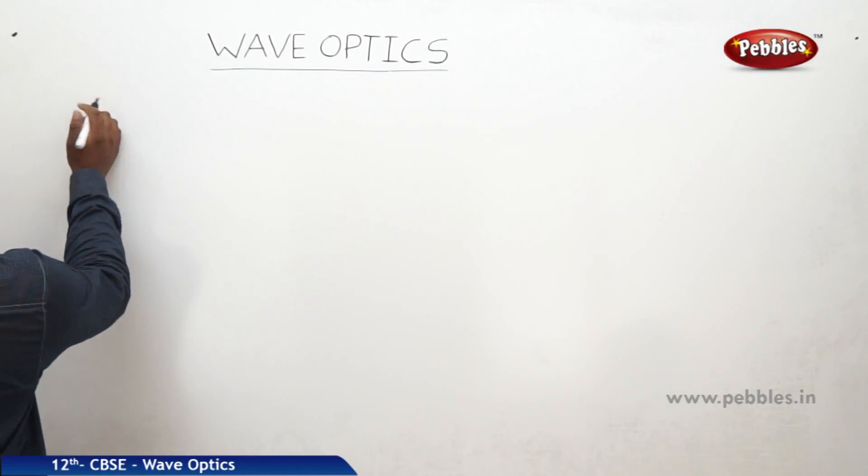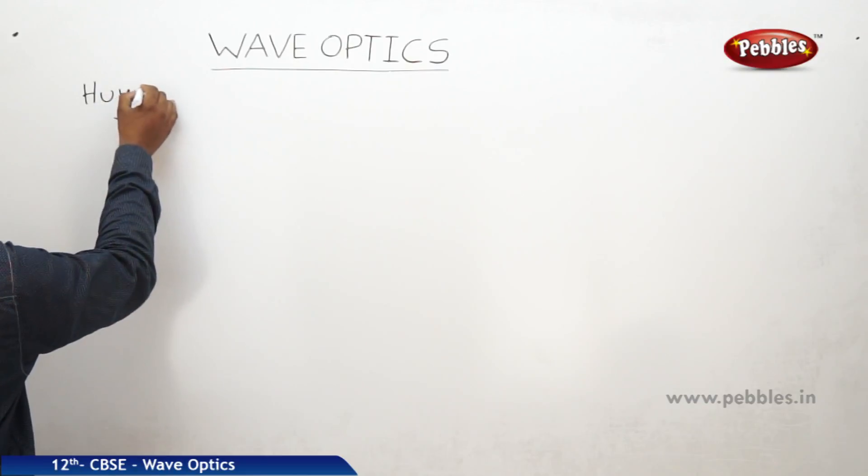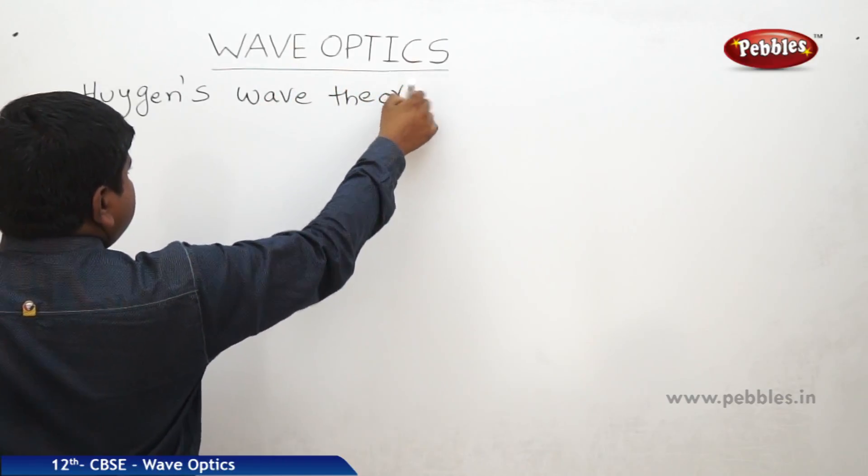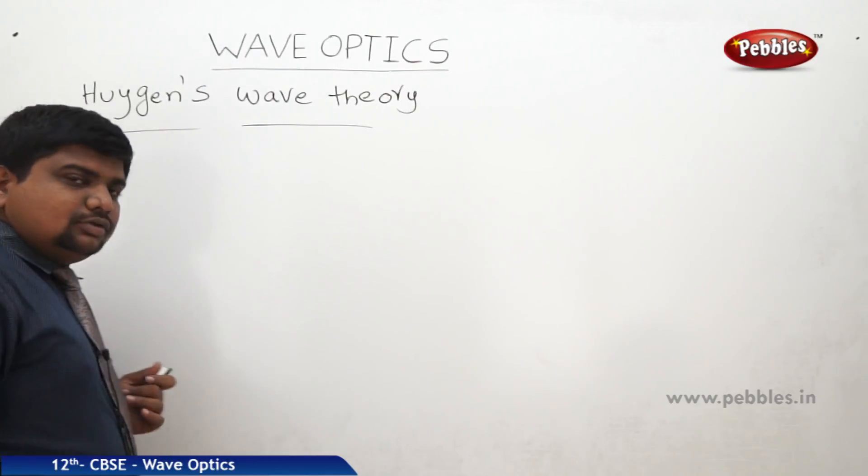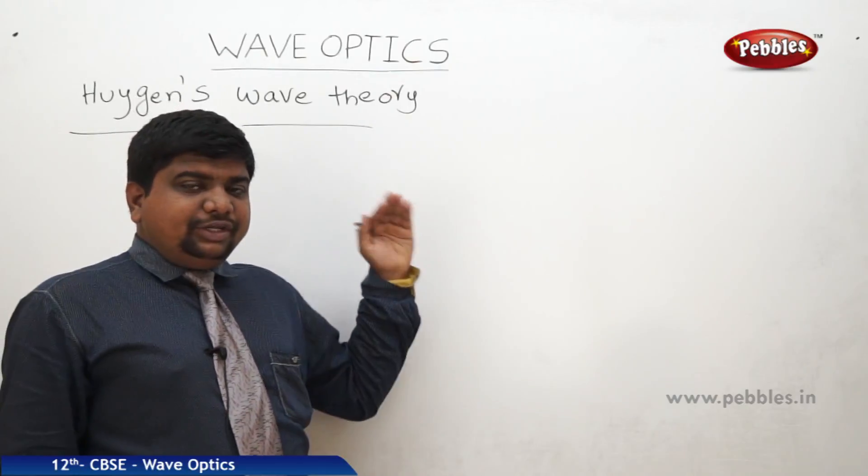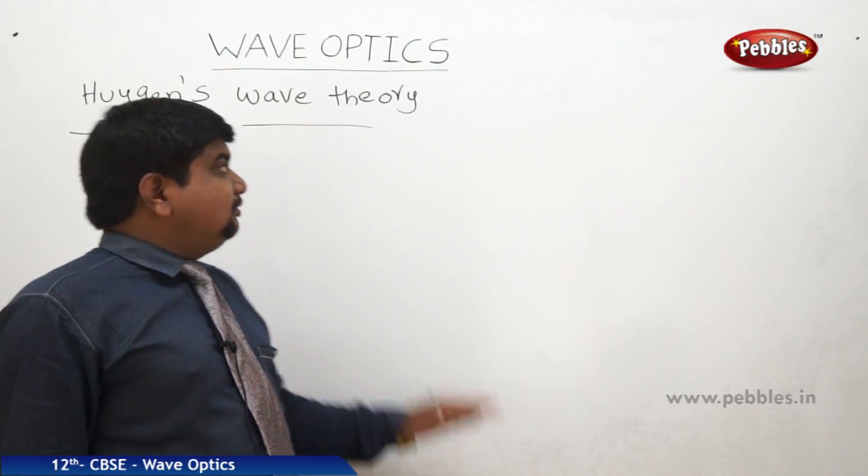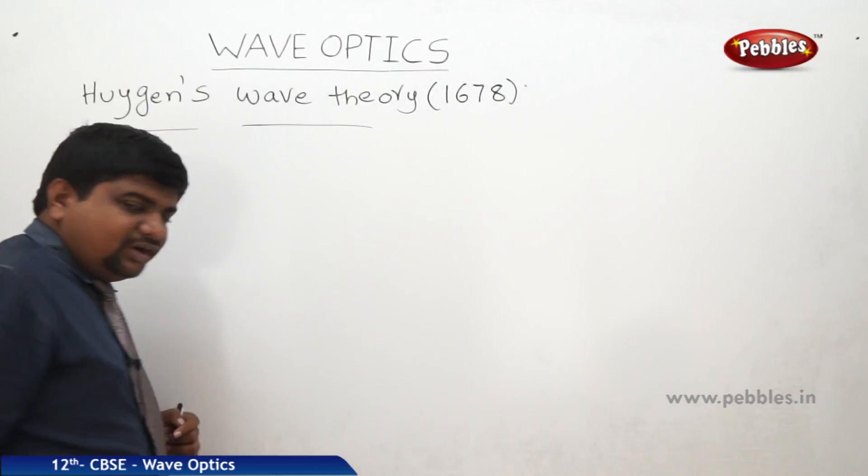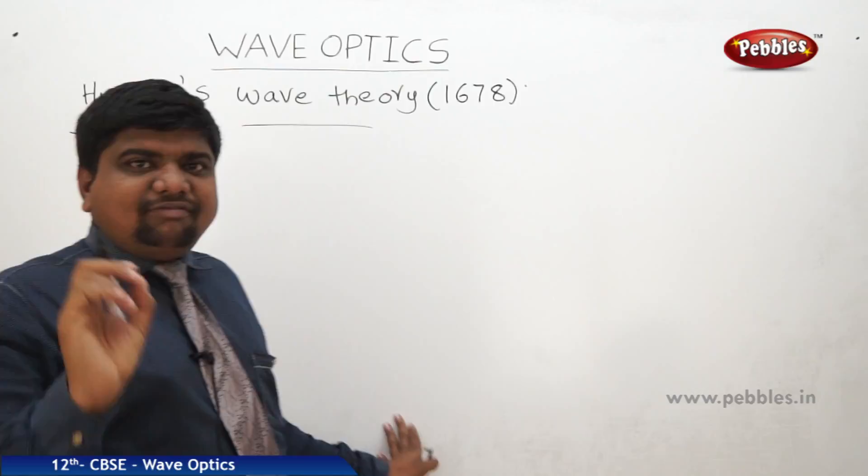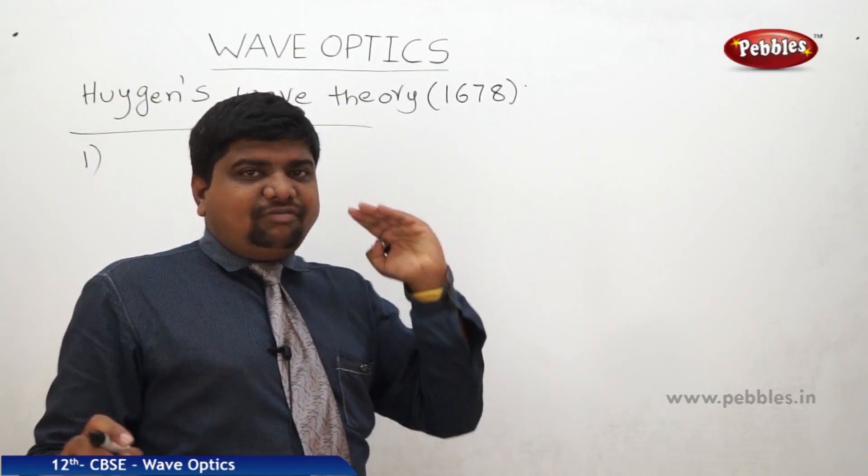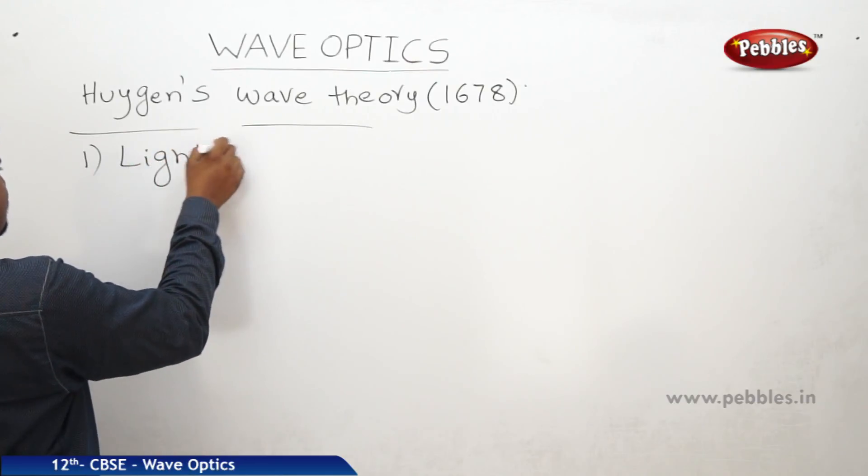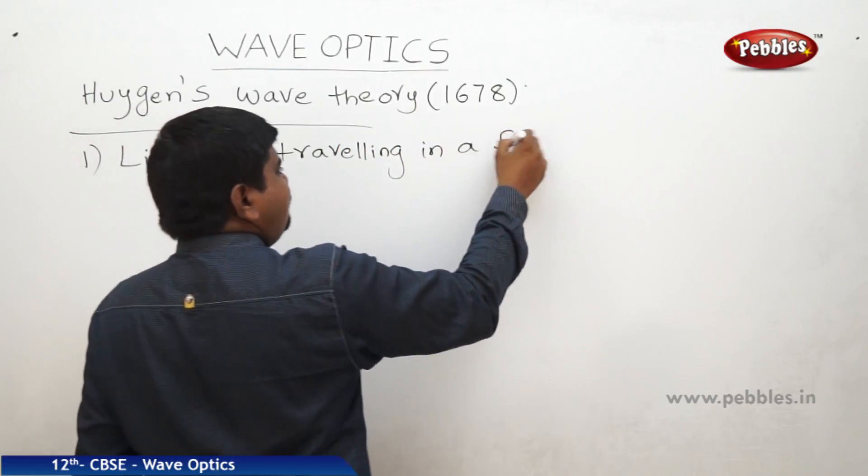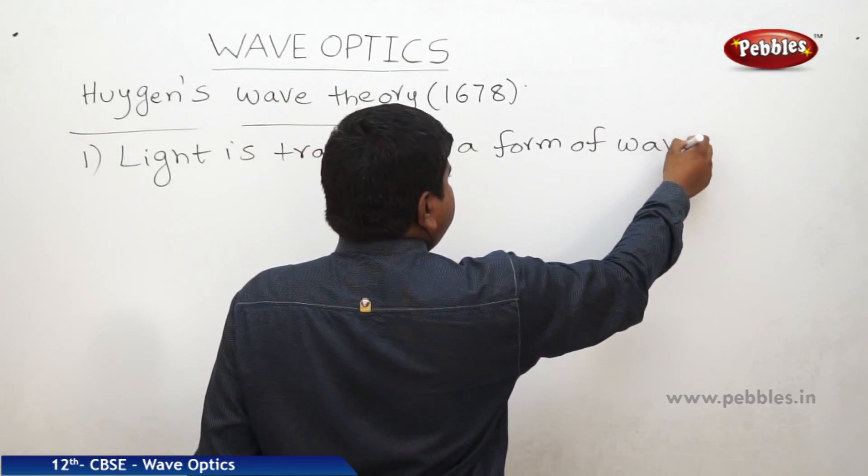The next one is Huygens' wave theory. He is a Dutch scientist. In 1676, Newton's prediction of the particle nature was derived. But in 1678, some modifications were made by Christian Huygens. What are the modifications? First one, light is a wave form or light can travel in a form of wave. Light is traveling in a form of wave. That is the first prediction.